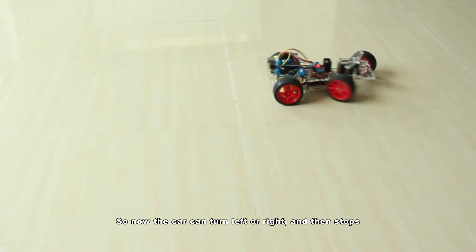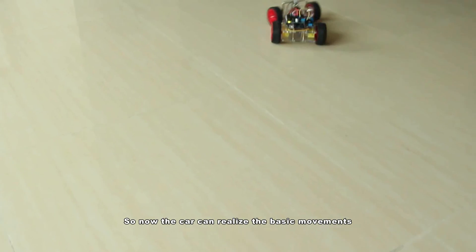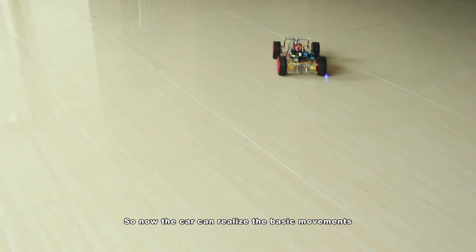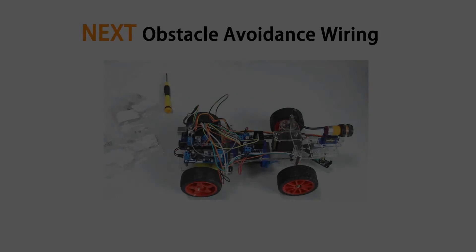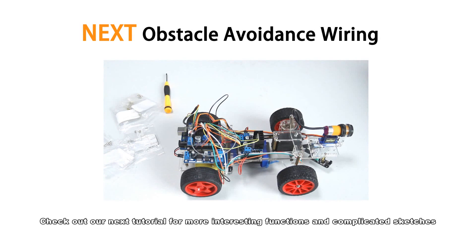So the car now can turn left or right and then stops. So now the car can realize the basic movements. Check out our next tutorial for more interesting functions and complicated sketches.